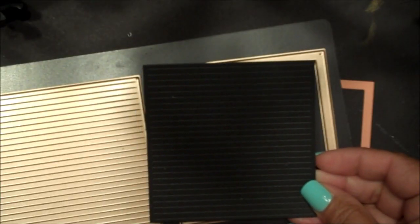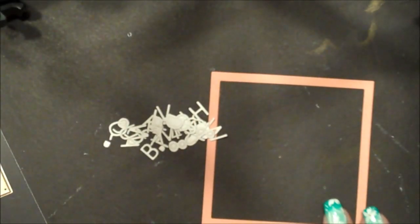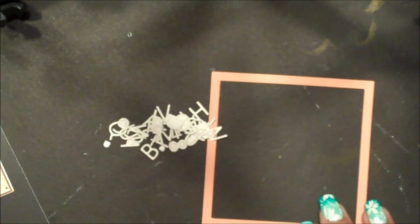Die cut and emboss the letter board following the directions for your die cutting machine. Then die cut the letters in the frame.